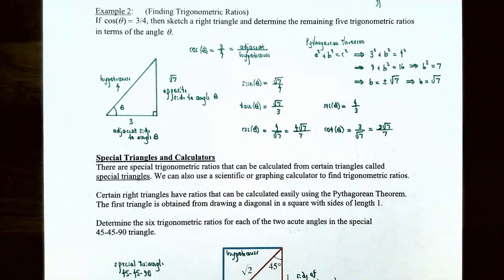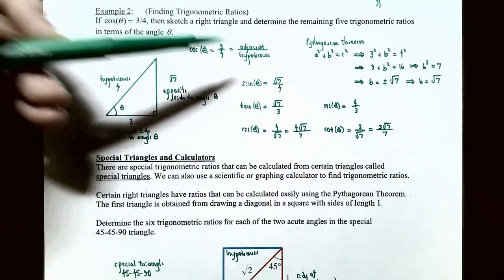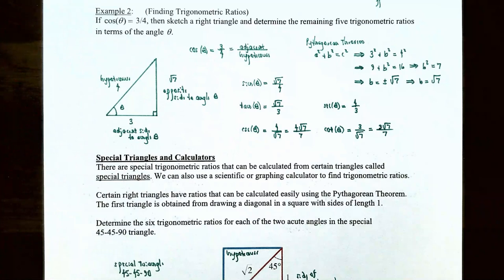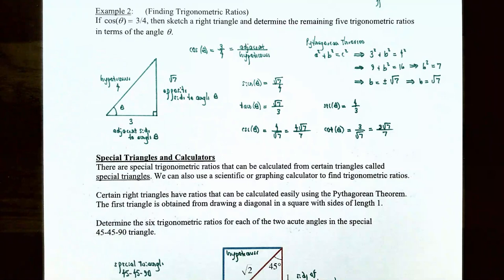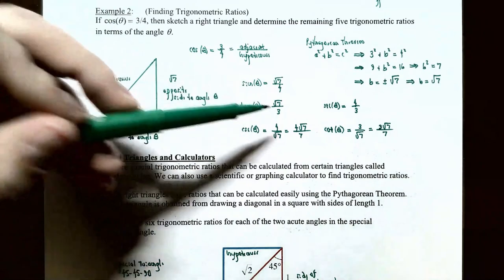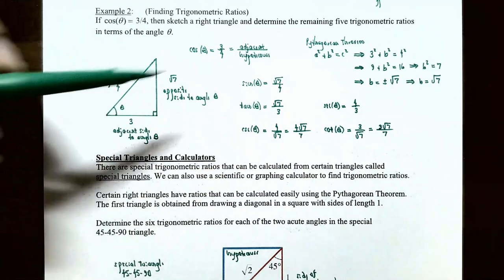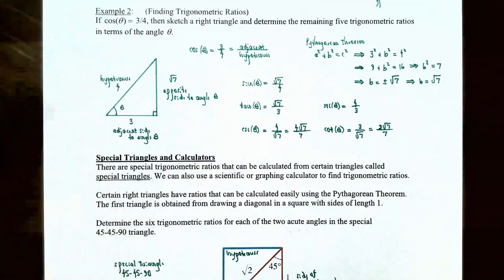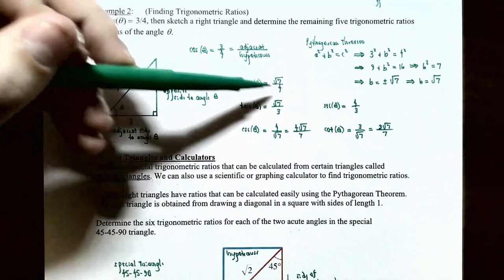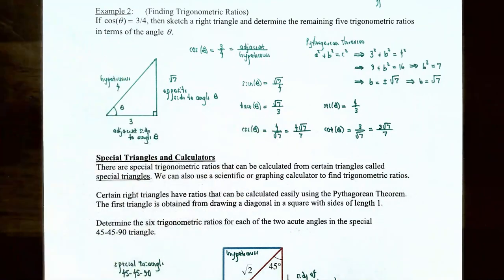Now that we know all three sides, we can find the remaining five ratios. Cosine was given as 3/4. Sine of theta is opposite over hypotenuse = √7/4. Tangent of theta is opposite over adjacent = √7/3. Cosecant of theta is the reciprocal of sine = 4/√7, which rationalizes to 4√7/7. Secant of theta is the reciprocal of cosine = 4/3.